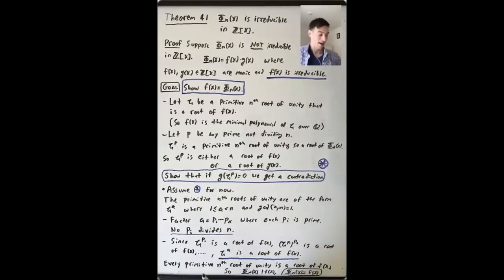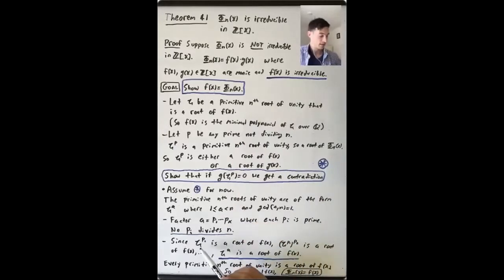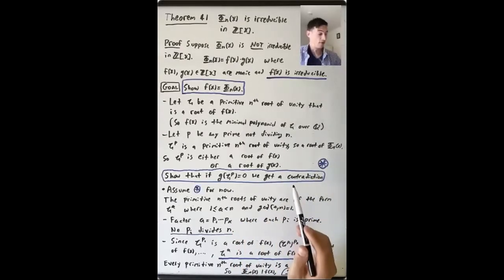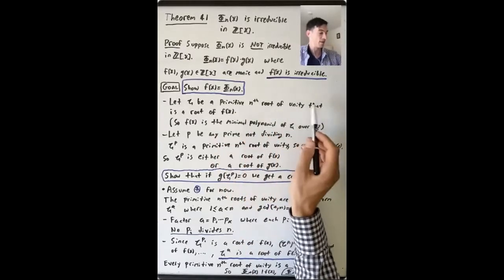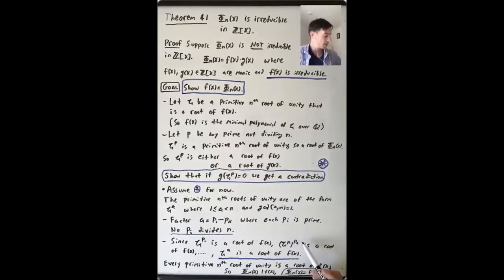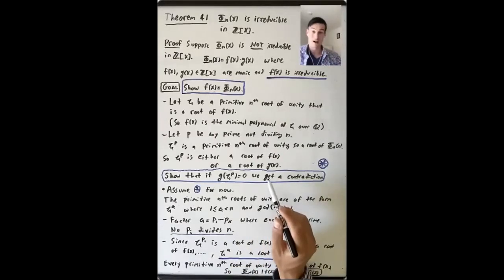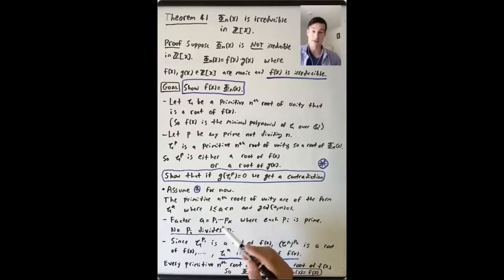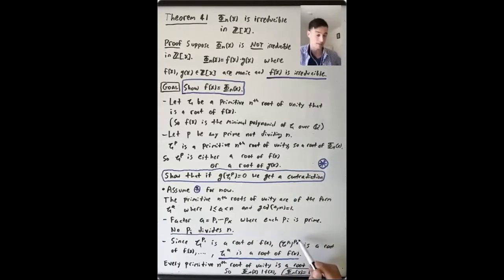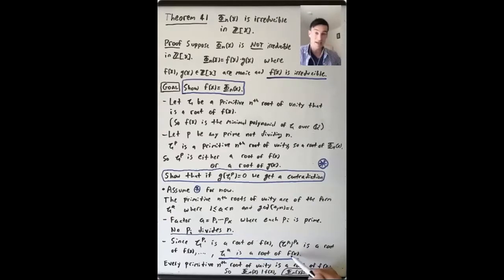What is true now is: zeta is a primitive n-th root of unity that is a root of f(x). Zeta to the p1 is also a primitive n-th root of unity, and it also has to be a root of f(x) by this statement. So zeta to the p1 is a primitive n-th root of unity that is a root of f(x). We raise it to p2 and get something that's also a primitive n-th root of unity and also a root of f(x) because it can't be a root of g. Then again raise it to p3, p4, up to pk. Because zeta to the p1 to the p2 is zeta to p1 times p2, going through this process, at the end you get zeta to the a is a primitive n-th root of unity and it is a root of f(x).